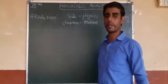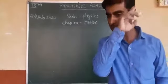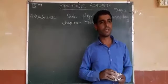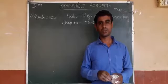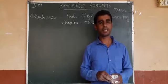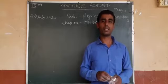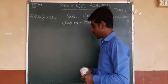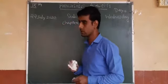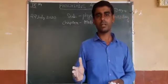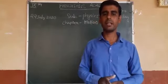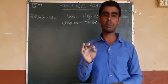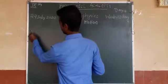Welcome to Class 9 Physics. Our chapter is motion. In our previous video we discussed all the concepts regarding speed — how to calculate speed and what are the units of speed. One more thing: suppose if you want to convert kilometer per hour to meter per second, or meter per second to kilometer per hour, then you must remember one thing. Let me take one example.